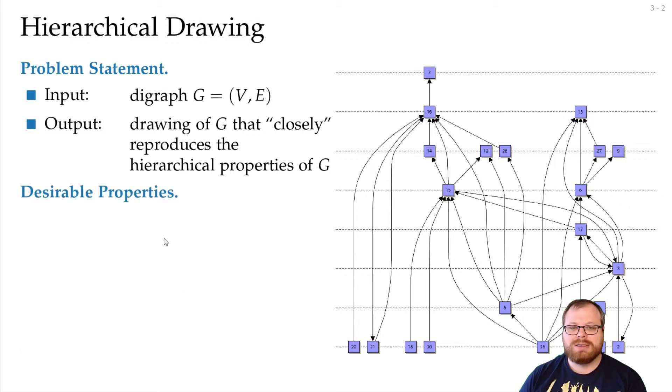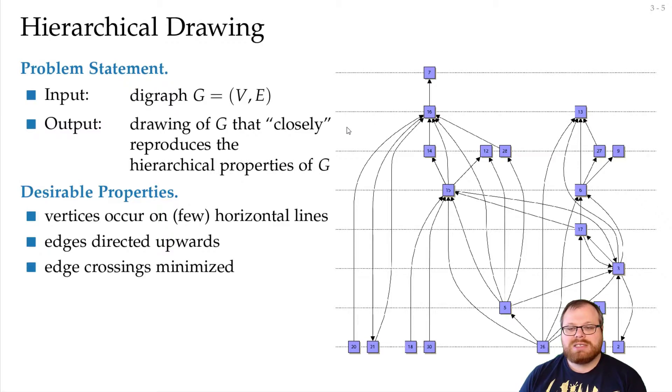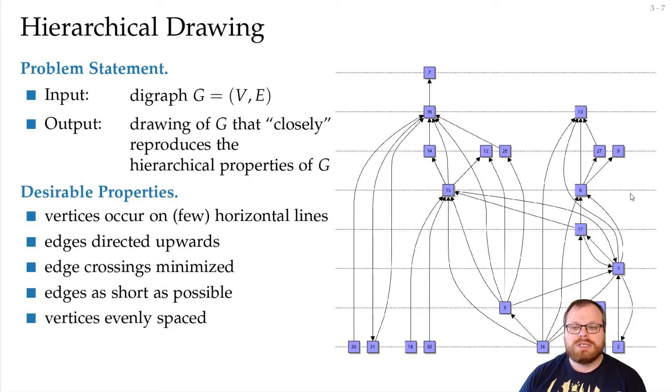The properties that this drawing should have are that we want to have the vertices on few horizontal lines, we want the edges to be directed upwards as far as possible, we want the crossings to be minimized, we want the edges to be as short as possible, and we want the vertices to be evenly spaced. The problem is, of course, that these criteria can be contradictory. So if we have short edges, that can mean that we need many crossings. And if we want the vertices to be evenly spaced, then that means that we cannot have only few horizontal lines. So we need some framework that has several heuristics that gives us a good drawing, but there is again no optimum one.